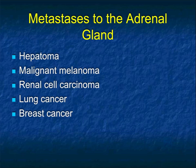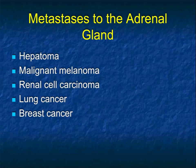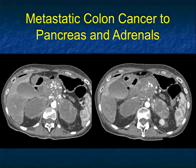Metastases to the adrenal are not uncommon. Essentially every malignancy can go to the adrenal. But things that are particularly common and give large metastases, and often bilateral, are hepatomas or melanoma. Renal cell mets are often very vascular, which tells them apart. Lung and breast are two other common entities, though usually those lesions are going to be relatively hypovascular.